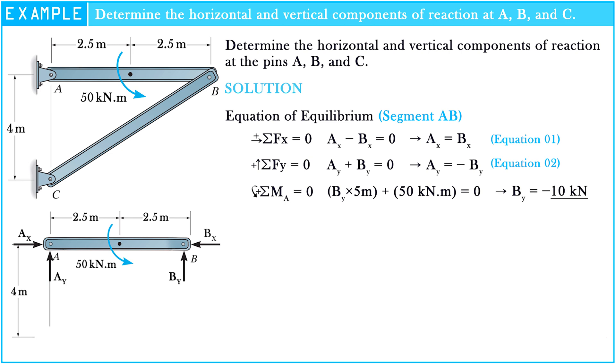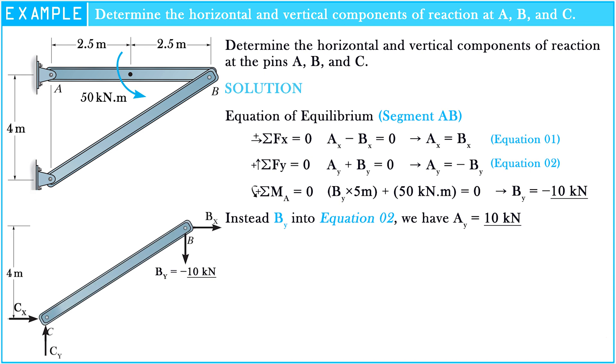After we know By value, we substitute By into equation 2 to reveal the value of Ay. We have Ay equals 10 kilonewtons. In segment AB, we revealed two unknown values. Ax and Bx will be solved in segment CB.